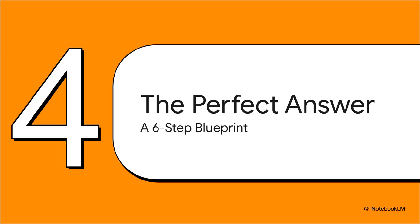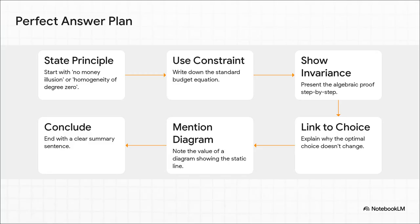Now for the really practical part: how to turn all this into a top-scoring exam answer. Here's your six-step blueprint. First, lead with the big idea — state the principle of no money illusion or homogeneity of degree zero up front. Second, lay down the math by writing out the budget constraint. Third, show your work — walk through the algebraic proof step by step. Fourth, connect the math back to theory and explain why an unchanged budget line means an unchanged choice. Fifth, mention that a diagram would illustrate this perfectly. Sixth, wrap it up with a clear one-sentence conclusion. Follow that structure and you're golden.